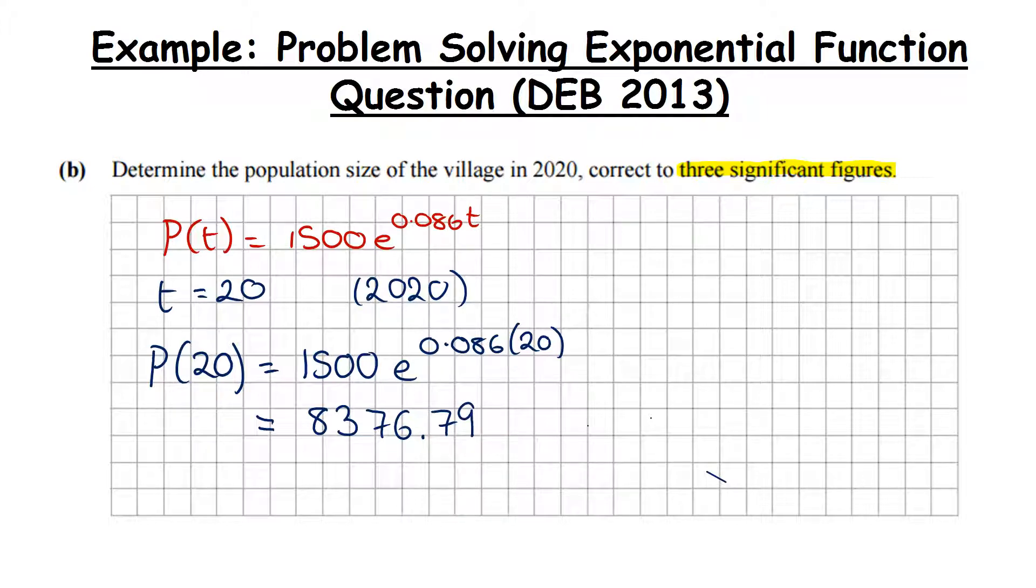Now just want to bring your attention to this - they asked for three significant figures. What significant figures means is non-zero numbers. It does not mean before or after the decimal place, they can actually appear anywhere. So we start counting from this end - one significant figure, two significant figures, three significant figures. So basically after this we need to round it. The number that comes after is a six, so we'll round up. So it's going to be 8380. And that is our answer.